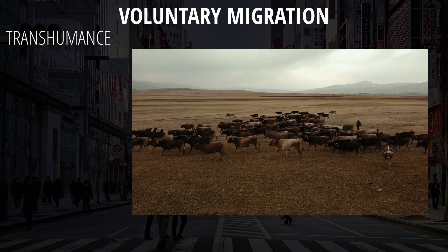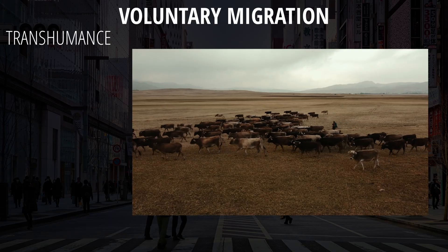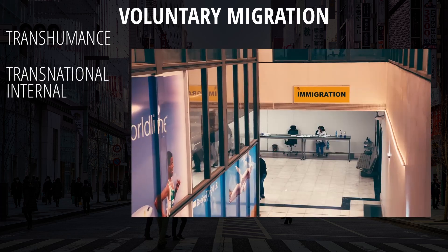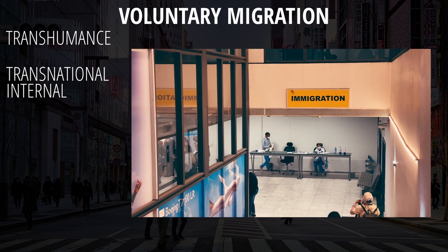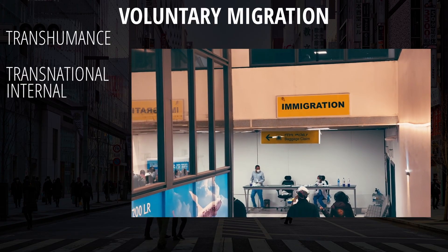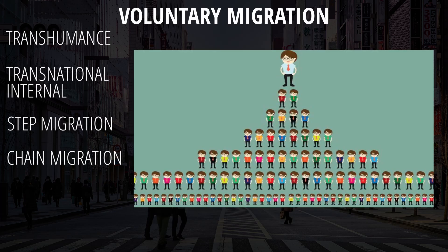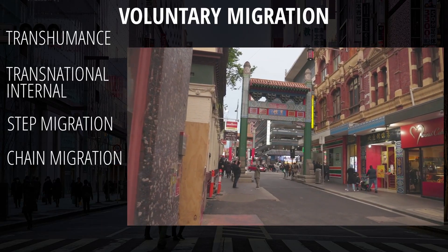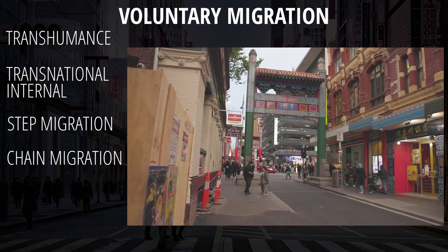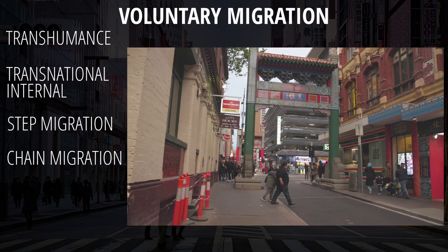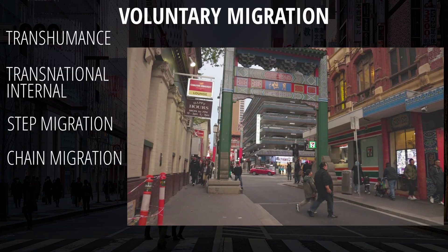Then there are voluntary migrations, which include transhumance — when people migrate for the purpose of herding and moving livestock, generally seen in developing countries. There's also transnational movement, which is movement between countries, and internal movement, which is movement within a country. There's the concept of step migration — small movements from a very small town to a large town. Then there's also chain migration, which lends itself to demographic and cultural pull factors. Chain migration refers to the idea that people who move tend to move to areas where people from the same nationality have moved as well. Chain migration contributes to building ethnic enclaves, such as Little Tokyo or Chinatown, as ethnic groups congregate with one another to establish a sense of camaraderie and bring their culture with them.